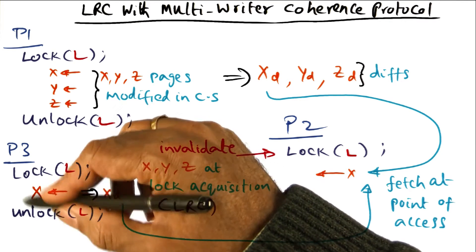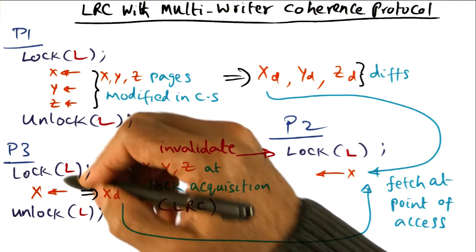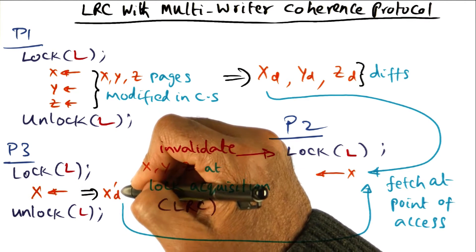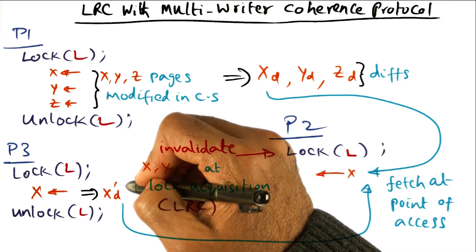And so when it executed its critical section, maybe in its critical section, it modified the page x again, and it created its own diff. Let's call it xd prime.